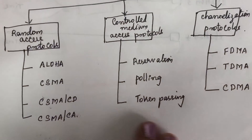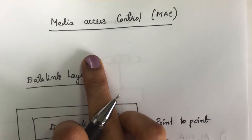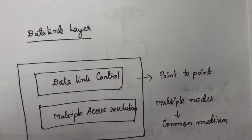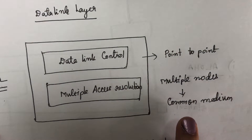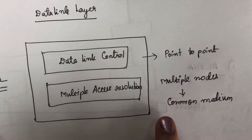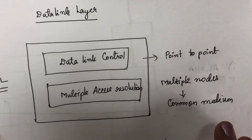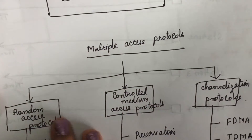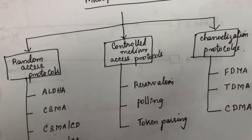We will be seeing all these protocols in this chapter. The purpose of media access control is to coordinate access to the broadcast link. Whenever multiple nodes share a common medium, there is a layer required for coordinating the activities of sending data into the network. That layer is called the multiple access resolution layer.